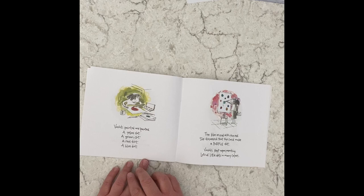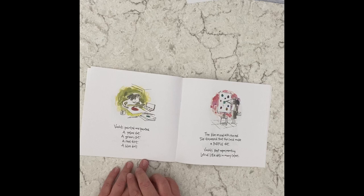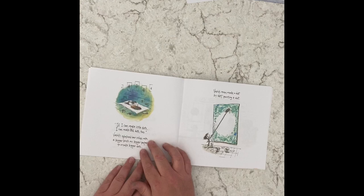Vashti painted and painted a yellow dot, a green dot, a red dot, a blue dot. The blue mixed with the red. She discovered that she could make a purple dot. Vashti kept experimenting lots and lots of little dots in many colors.